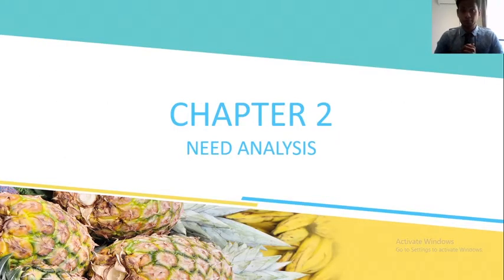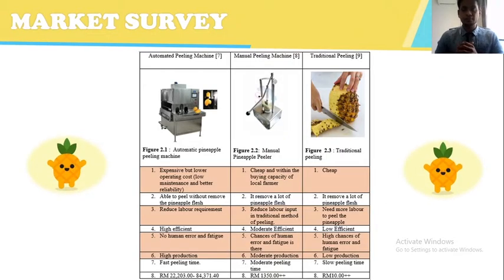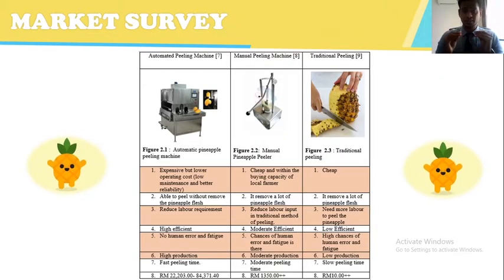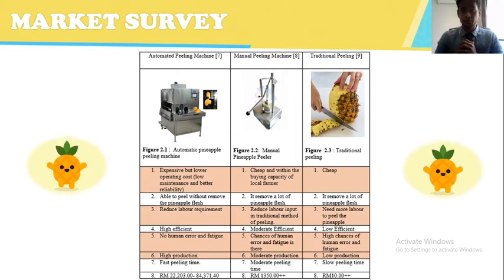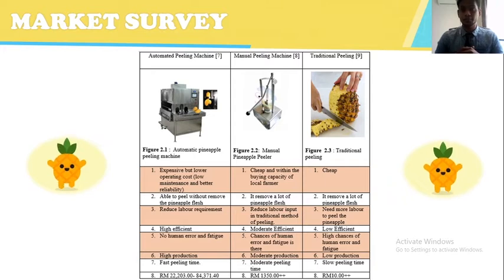Next we move on to Chapter 2, which is the analysis. We conducted a market survey and found that there are three types of machines available in the market: the first is an automated peeling machine, the second is a manual peeling machine, and the third is a traditional peeling machine.